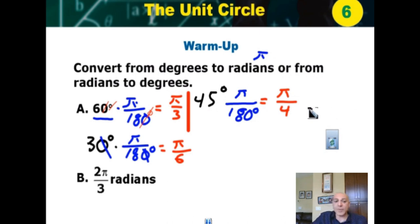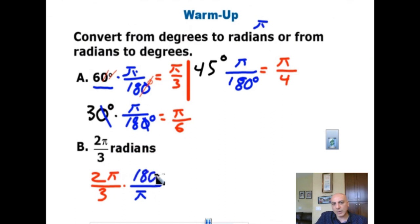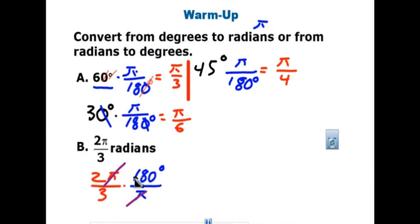Now, how do I go backwards — from radians to degrees? You multiply by the reciprocal, meaning 180 divided by π, because you want to get rid of the π. So take 2π/3 and multiply by 180/π. The π cancels, and you simplify: 18 divided by 3 is 6, put the zero back — 2 times 60 gives you 120 degrees.